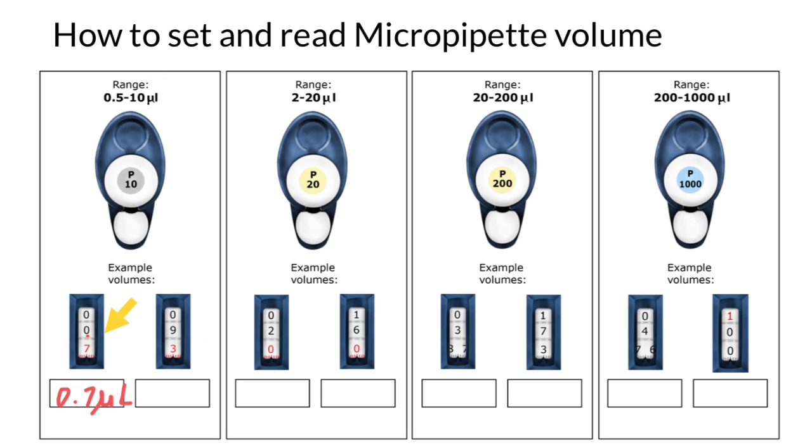Again, we just put here a decimal point between nine and three, between black and red numbers. And now we understand that this is 9.3 microliters.